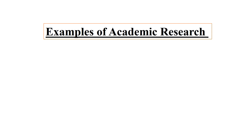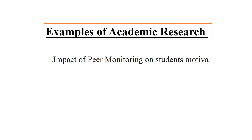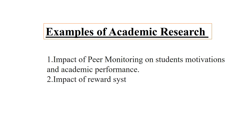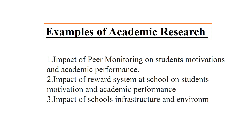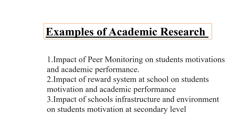What are the examples of academic research? For example, the impact of peer monitoring on students' motivations and academic performance. Second, the impact of the reward system at school on students' motivation and academic performance. Third, the impact of the school's infrastructure and environment on students' motivations at the secondary level. These are the different examples of academic research.